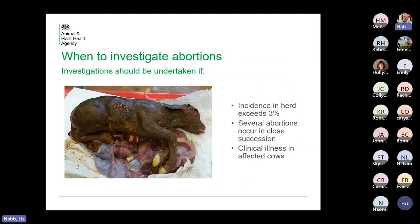Setting that aside, it's perhaps not financially viable to investigate every single abortion with the full raft of tests. As a general rule, we say if the annual incidence in the herd exceeds three percent, you should be looking into some of these. And then if several abortions occur in close succession — what we class as an abortion storm — that would certainly trigger some investigation. The other thing is if the cow that has aborted is clinically ill, which could be an indicator of salmonella or perhaps respiratory signs indicative of a new IBR infection in the herd.